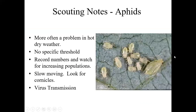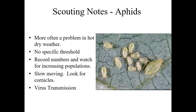Aphids are more of a problem in hot, dry weather. We don't have a specific threshold — we're just looking for increasing populations. They're very easy to identify: slow moving, quite small but visible to the naked eye or with a hand lens. They have cornicles or tailpipes and a teardrop-shaped body. You'll often see a larger mother aphid with a bunch of little babies, because aphids can give live birth. They can also clone themselves — viviparous reproduction — and each baby can quickly turn around and start giving live birth, so populations can increase very rapidly.